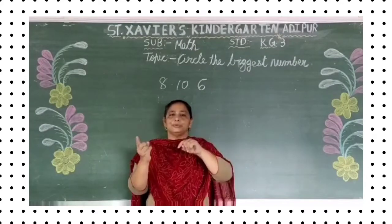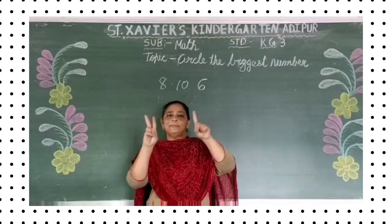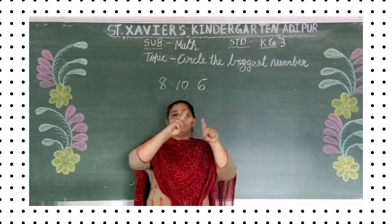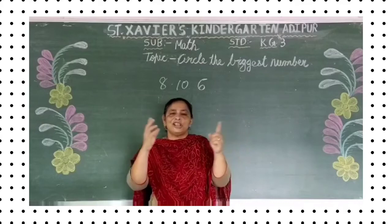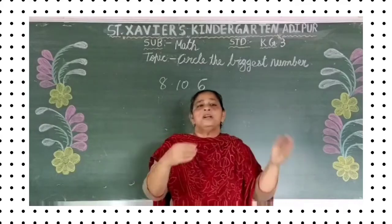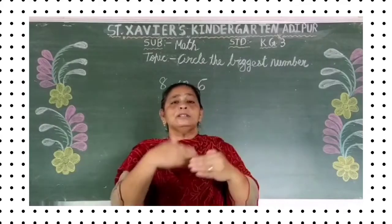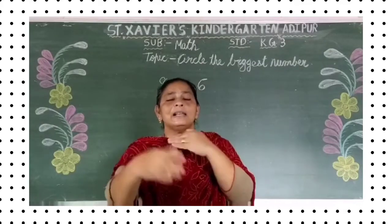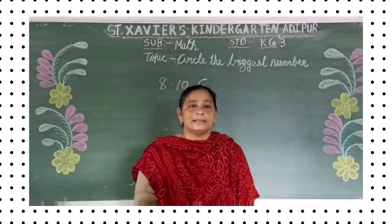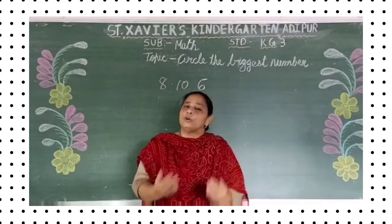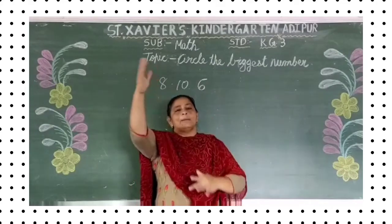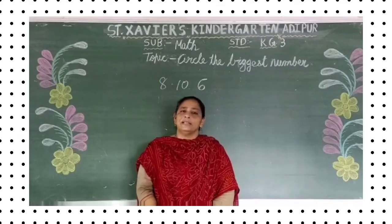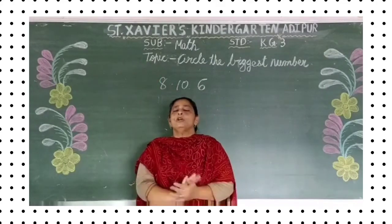Number one and two. Toh which one is big? One ay ki two? Yes, naturally two. One ki baad joh baad wala number aate, woh number bada hoote jate hai.